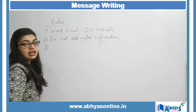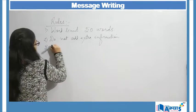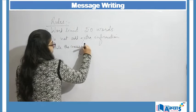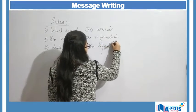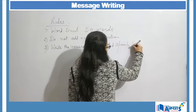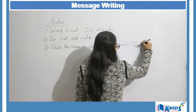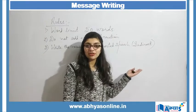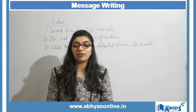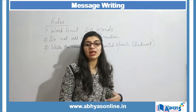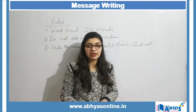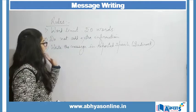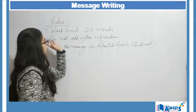The third rule is that we should make sure we write our message in reported speech. That reported speech should always be indirect. It should generally be a third person who is conveying the message, and we should not directly use the words of the speaker who actually sent the message. So you have to keep in mind to write the message in reported speech, and the word limit should be 50.